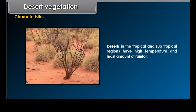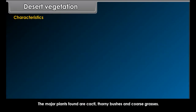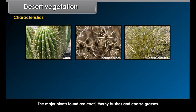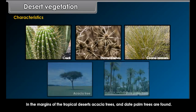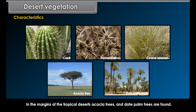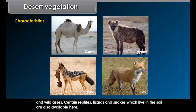Characteristics. Deserts in the tropical and subtropical regions have high temperature and least amount of rainfall. Commonly, short shrubs occur in patches. The small trees are characterized with thorns, thick stems, long roots and wax-coated leaves and stems. The major plants found are cacti, thorny bushes and coarse grasses. In the margins of the tropical deserts, acacia trees and date palm trees are found. Important animal species of the desert are camel, hyena, fox, jackal and wild asses.